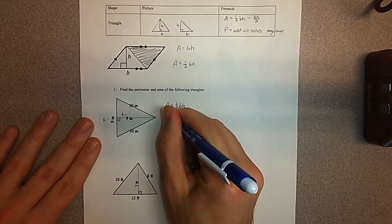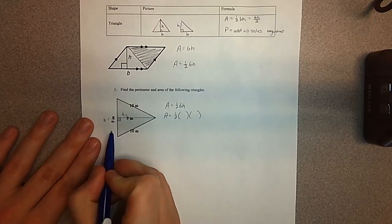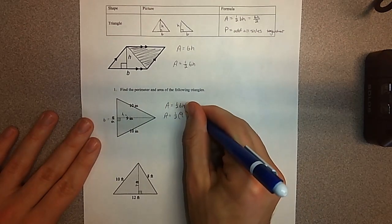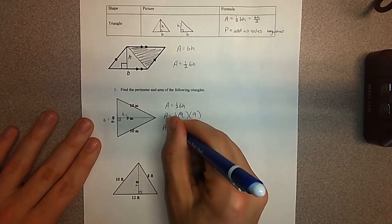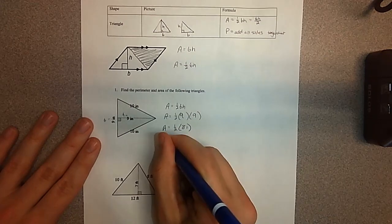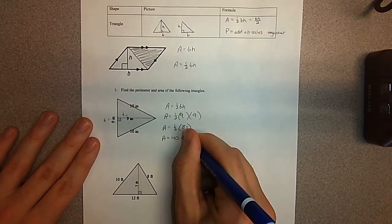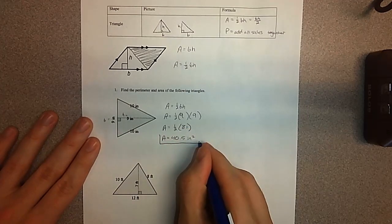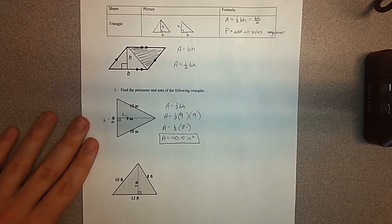So I'm just going to plug in values. Area equals one half times the base times the height. My base is 9, my height is 9, so I'm just multiplying these together. I'm going to keep the one half out there for now. Nine times nine is 81, and half of 81, we do get a decimal, that is fine, 40.5. And then our units will be inches squared or square inches. When dealing with area, it is square units.